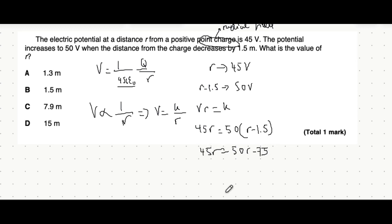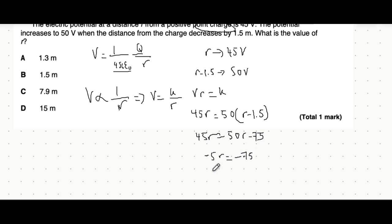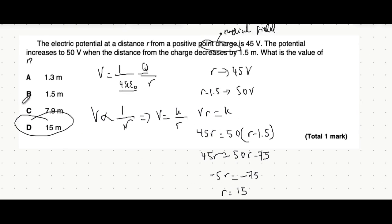You can make it for r. So let's do that. Let's take over 50r from both sides. We'll end up with negatives on both sides but it's fine. And then we divide both sides by minus 5 and we get r is equal to 15. So your value of r is option D, 15.